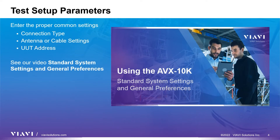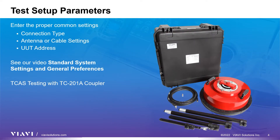Before we start our testing, let's go over the unique test setup parameters. The common test setup parameters like test method, gain and loss settings, and UUT address have all been covered in our video titled Standard System Settings and General Preferences. Please note, when TCAS testing with the Viavi TC201A coupler, it is important to follow the documentation that comes with the TC201A coupler as it diverges from normal coupled connection settings. In this instance, the antenna port on the AVX-10K is used even when testing in the direct with coupler mode.